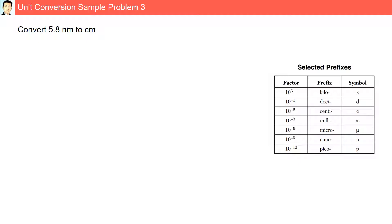Practice problem 3: Convert 5.8 nanometers to centimeters. Here we have to go first to our base unit, meters. From nanometers to meters and then from meters we will go to centimeters. Our equalities are 1 nanometer equals 10 to the minus 9 meter, and 1 centimeter equals 10 to the minus 2 meters.